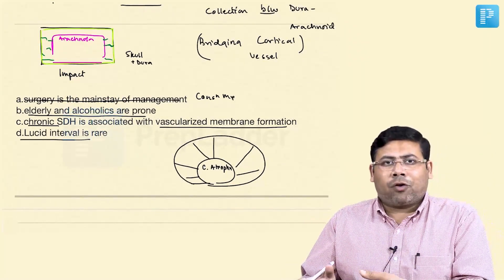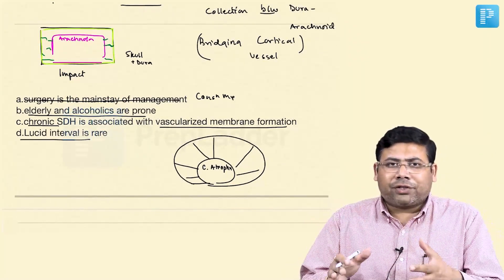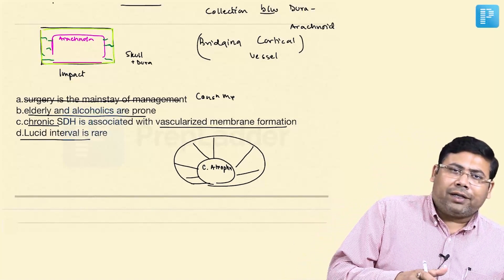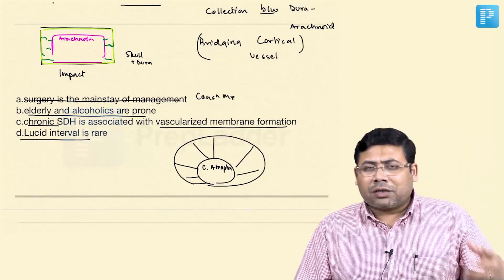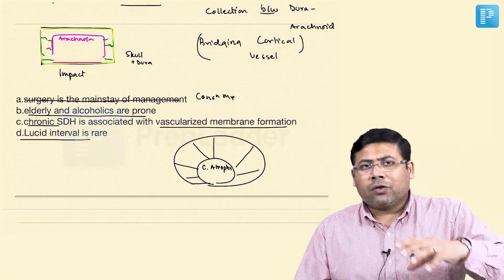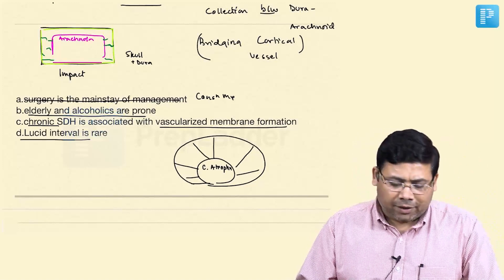Now, this is a low impact trauma and hence falling from a chair of an 80 year old is sufficient to cause bridging cortical vessels rupture but it is not sufficient to impose a concussion. So, lucid interval will not be seen here.